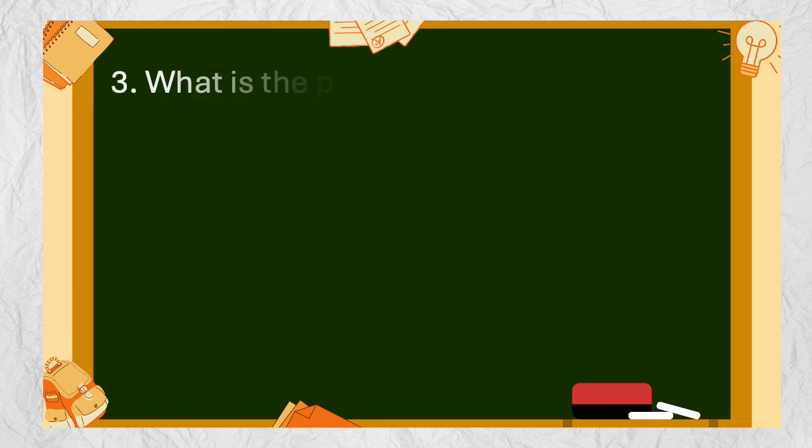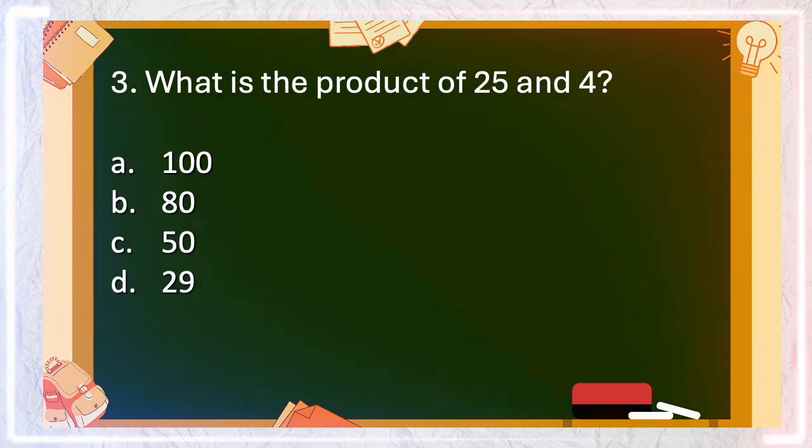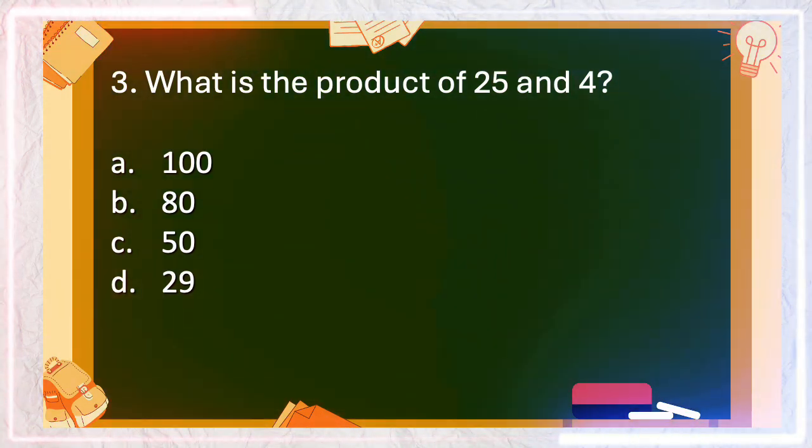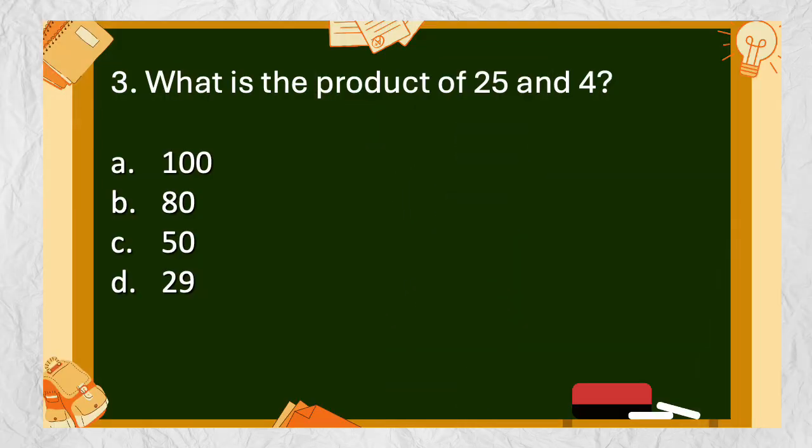Number 3: What is the product of 25 and 4? A. 100, B. 80, C. 50, D. 29. The answer is A. 100.